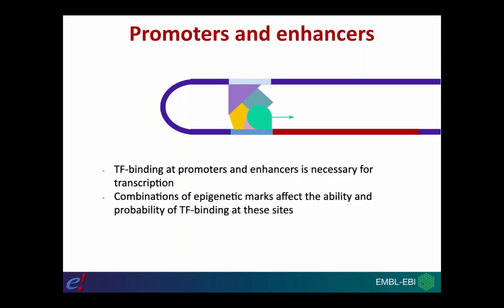Transcription factor binding at promoters and enhancers is necessary for transcription. It's the combination of epigenetic marks — the post-translational modification of histones and the DNA methylation pattern — that affects the ability of transcription factors to recognize and bind their motifs at promoters and enhancers.